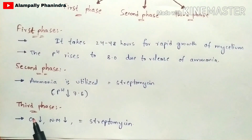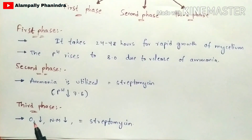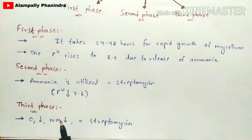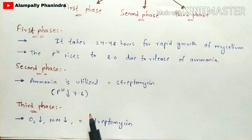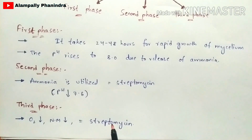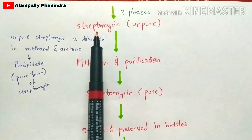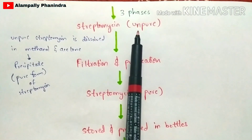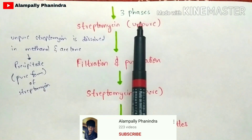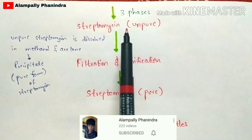The production of streptomycin occurs in the third phase. Here the oxygen requirement is low because the overall process is near completion — oxygen content decreases and the nutrient medium also decreases. Once both oxygen and nutrient medium are depleted, streptomycin is produced. However, the streptomycin obtained at this stage is impure in form.